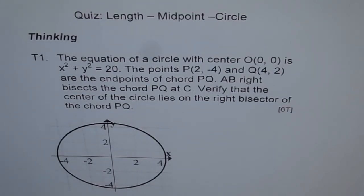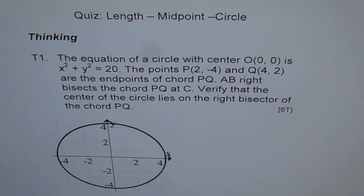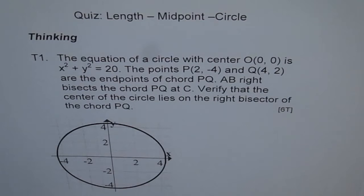Here is a thinking problem on length, midpoint, and circle. This is a very good question and kind of difficult in this question bank. T1: The equation of a circle with center (0,0) is x² + y² = 20. The points P and Q are the endpoints of the chord PQ. AB right bisects the chord PQ at C. Verify that the center of the circle lies on the right bisector of the chord PQ.